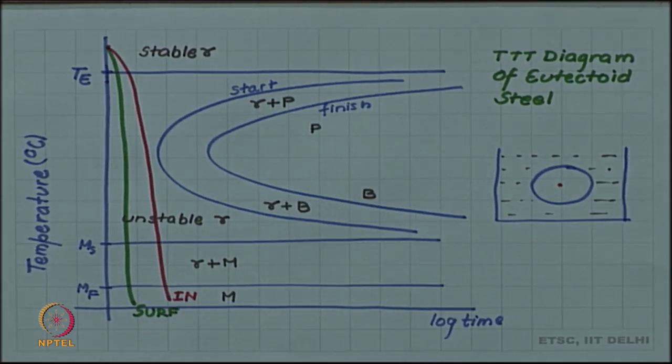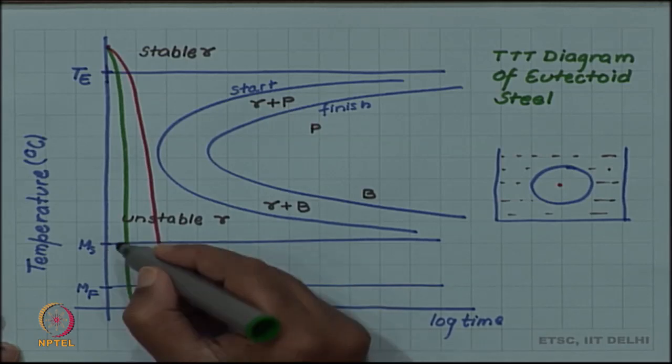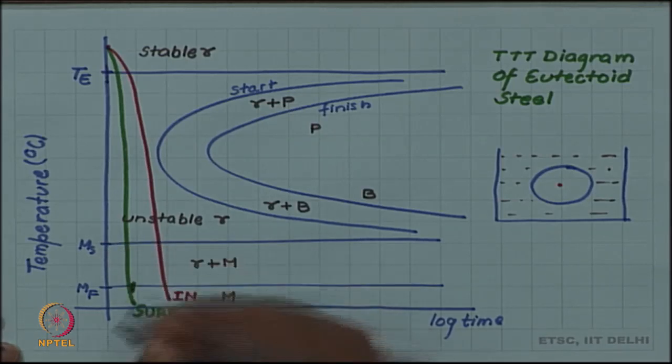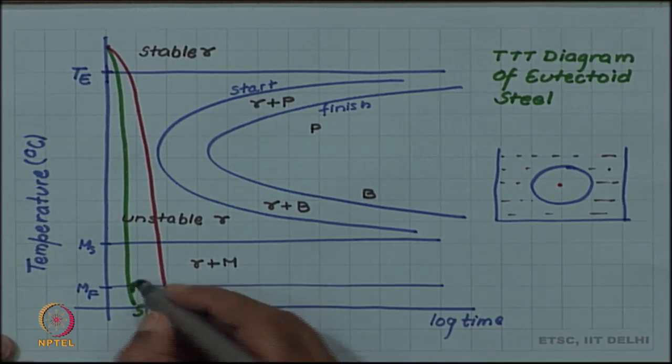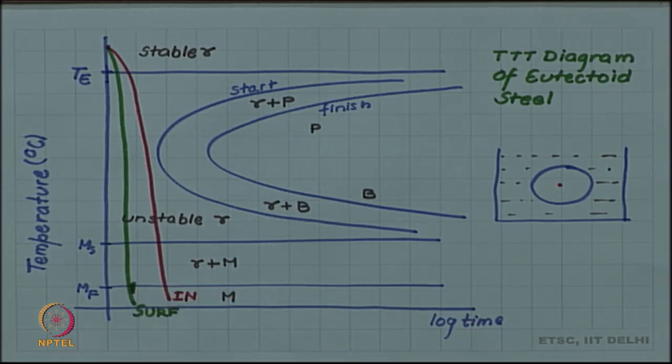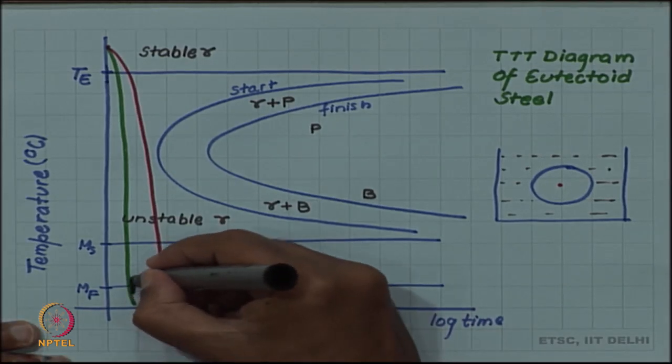Now you can see that when the surface crosses martensite start and martensite finish at this temperature at this time, at that time the inside is still warm.